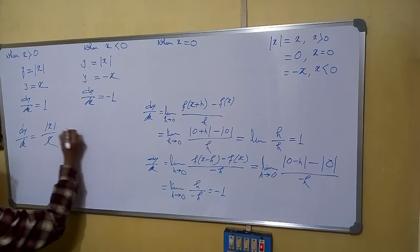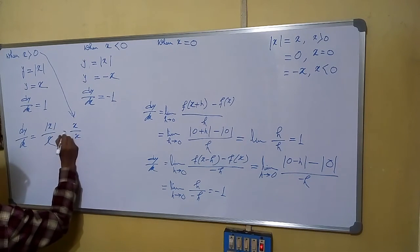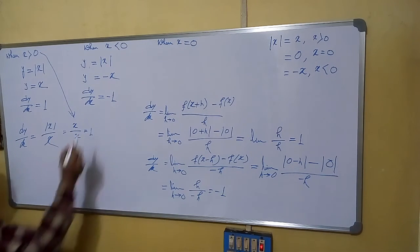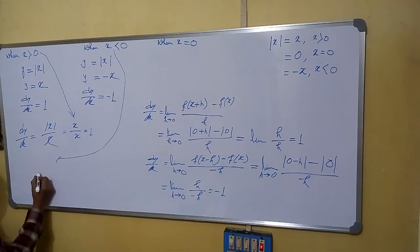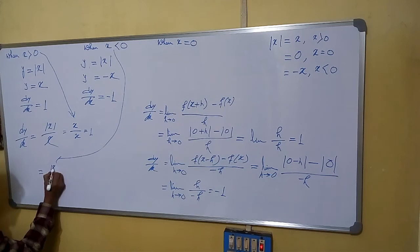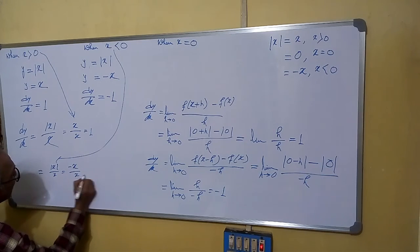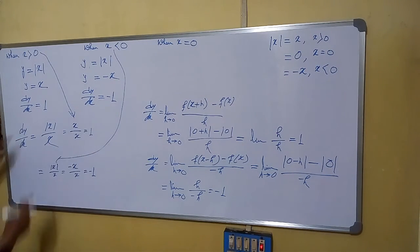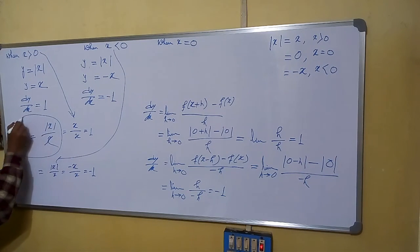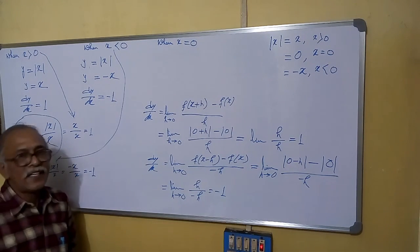Now check it: when x is greater than 0, mod x by x gives x/x equals 1. And when x is less than 0, mod x is minus x, so mod x by x gives minus x/x equals minus 1. So it is satisfying both conditions. In general, we can always write dy/dx equals mod x by x. And since x appears in the denominator, it confirms that the derivative does not exist at x equals 0. Thank you.